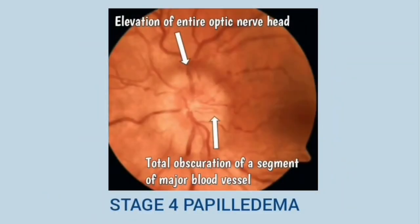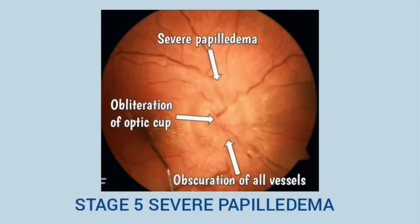This is stage 4 papilledema. There is elevation of the entire optic nerve head and total obscuration of a segment of a major blood vessel. This is stage 5 papilledema, with severe papilledema, obliteration of the optic cup, and obscuration of all the blood vessels on the optic disc.